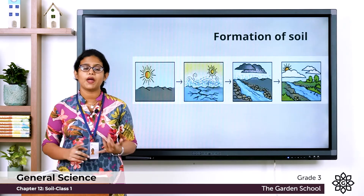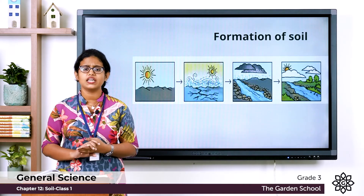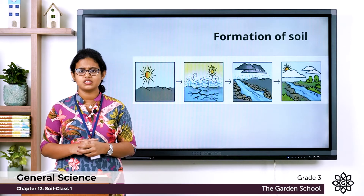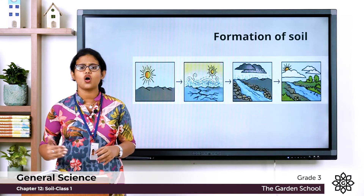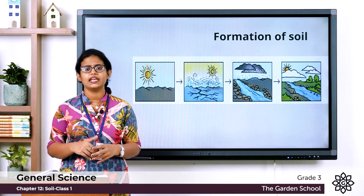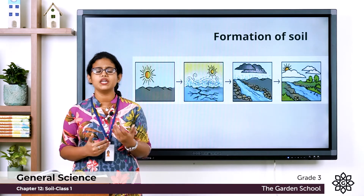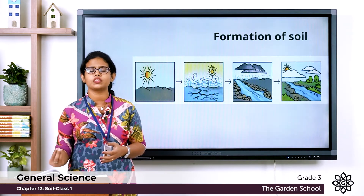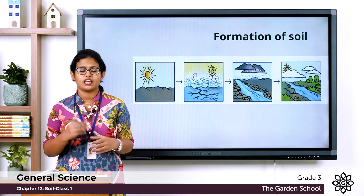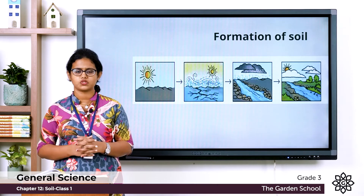From those broken rocks, pebbles, sand, silt, and clay were formed. Then later on, plants appeared on the land, and their dead remains mixed with the particles of rocks. This is how soil was formed.